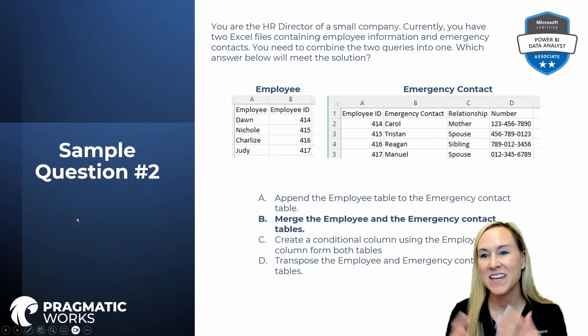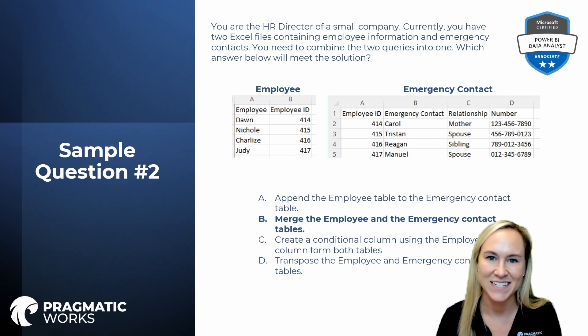The correct answer for question two is to merge the employee and emergency contact tables together. That's it for episode two — a quick one going over the merge and append queries objective. This is a common topic typically seen as a few questions on your PL-300 exam. Make sure you know the difference between merging and appending queries, and the necessary sequence of steps, because you could see a straightforward multiple-choice question or a build-list reorder question where you drag the correct sequence of steps to the answer area in the correct order.